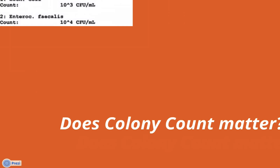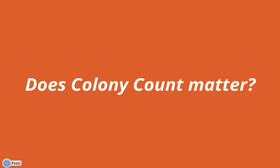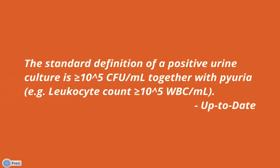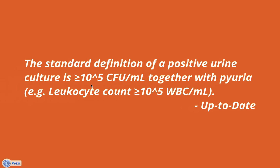So does the colony count matter? Is it reflective of the magnitude of the infection? According to UpToDate, the standard definition of a positive urine culture is greater than 100,000 colony-forming units per ml, together with pyuria. And the pyuria you're going to get from the leukocyte count or the leukocyte esterase lighting up on the dip. In those other two examples where the concentration was less than 10 to the 5th, or 100,000 CFUs, you still could conclude that there was a urinary tract infection if the clinical presentation supported that.